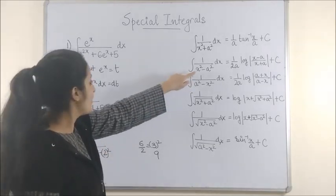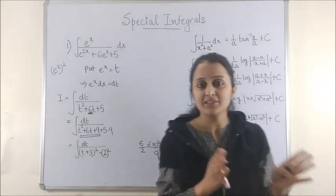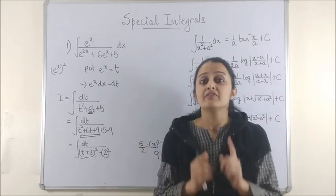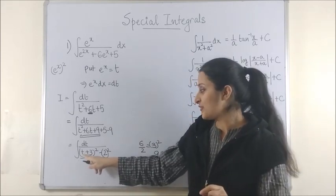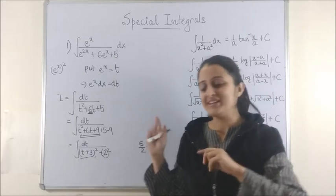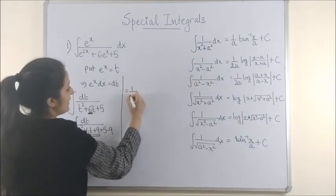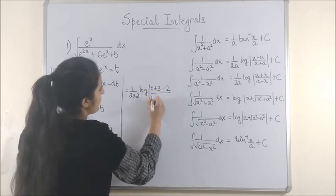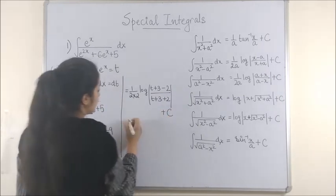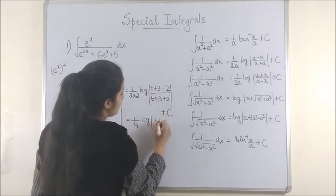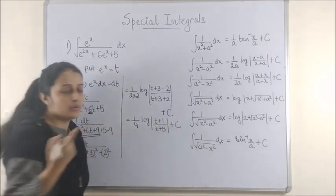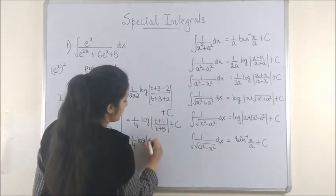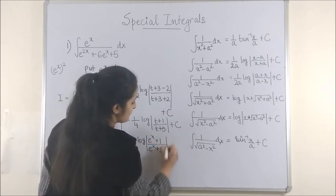Now of course it has taken the form x squared minus a squared. We discussed in the previous video that this x basically stands for any linear function, which t plus 3 is, with coefficient of x as 1 — so here the coefficient of t is 1. Applying this formula, it becomes 1 upon 2a into log mod of x minus a upon x plus a plus c, which gives us 1 by 4 log of t plus 1 upon t plus 5 plus c. Never leave your answer here — replace back, and you get 1 by 4 log of e to the power x plus 1 upon e to the power x plus 5 plus c.